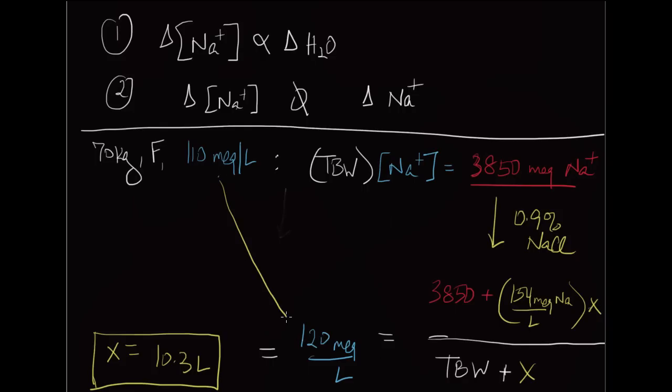Now the rate at which you give that is all going to depend on factors such as your access, how quickly she can take the fluid, whether she has any other comorbid conditions that would predispose her to edema, specifically pulmonary edema, which would limit the amount of normal saline that you can give. But if you wanted to go from 110 to 120, you need to give this much amount of normal saline.